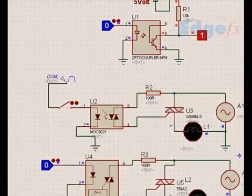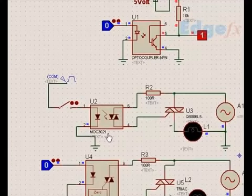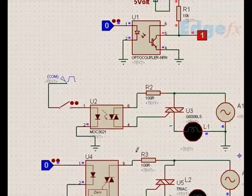One is a zero opto isolator. We will see what is the difference between the non-zero isolator, opto isolator or optocoupler and zero crossing opto isolator. MOC 3021, MOC 3020, MOC 30, these are the series.